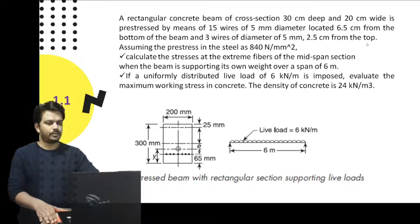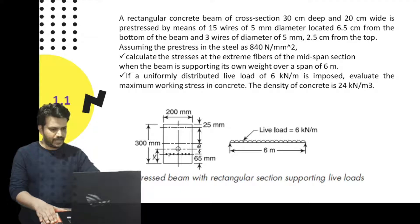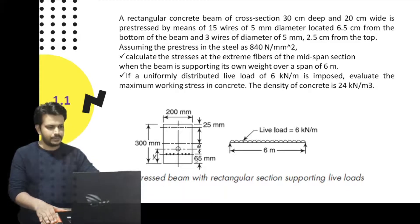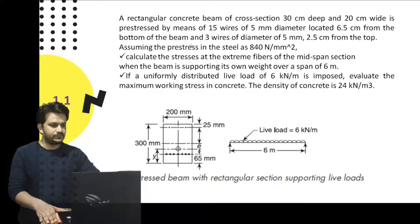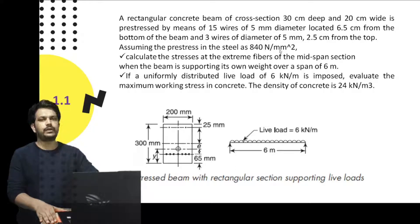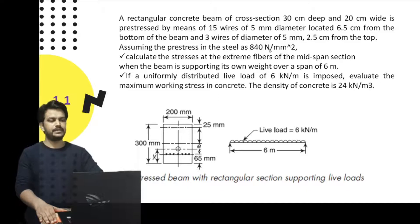So just see here — these are the 15 wires of diameter 5 mm which are located at 65 mm from the bottom, and three wires of the same diameter are located at 25 mm from the top. These wires are assumed to be pre-stressed at 840 N/mm².